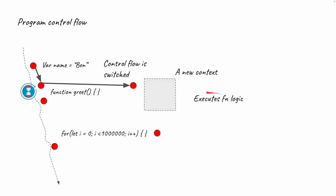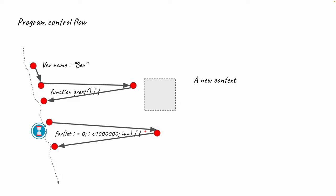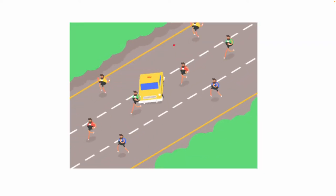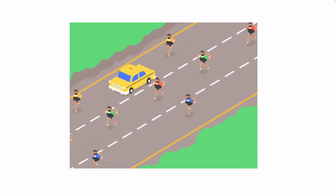A new context is created and the logic of the function is executed there. During this time, the main thread is waiting. Once the function is done and returns, the control flow jumps back to the thread and continues execution. It reaches the for loop and waits while the loop is evaluated. Once done, control jumps back to the main thread. Any code below this line has to wait until the loop is done — the program is essentially blocked from proceeding.